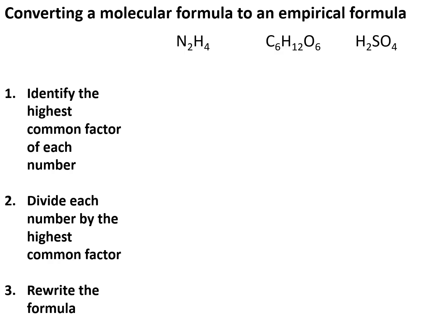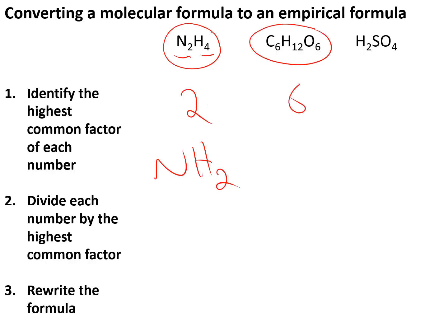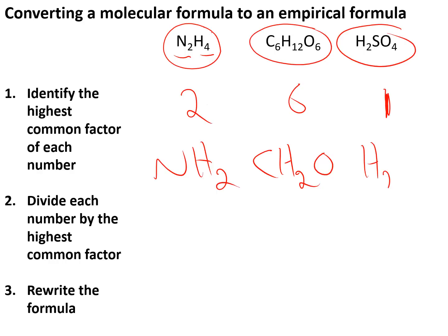An empirical formula is a molecular formula expressed as a ratio in its lowest terms. To find it, we find the highest common factor of the numbers in the formula. For N₂H₄, the highest common factor of 2 and 4 is 2, so dividing both by 2 gives NH₂. For C₆H₁₂O₆, the highest common factor of 6, 12, and 6 is 6, giving CH₂O. Sometimes the empirical formula and molecular formula are the same — if the highest common factor is 1, as with H₂SO₄.